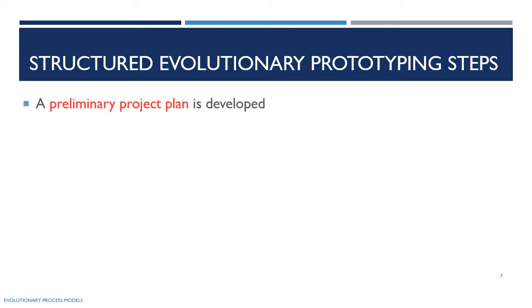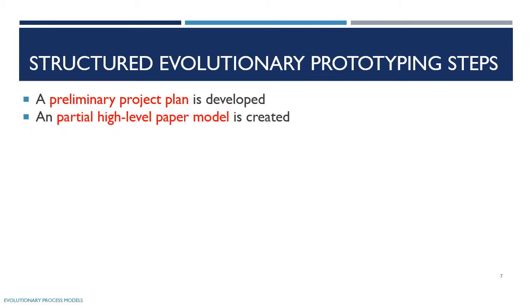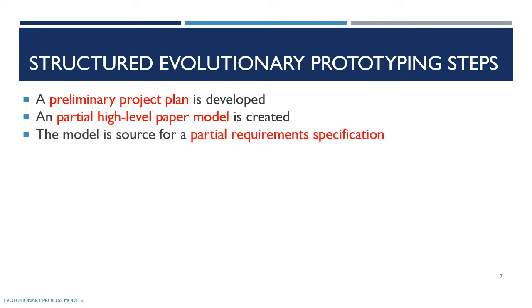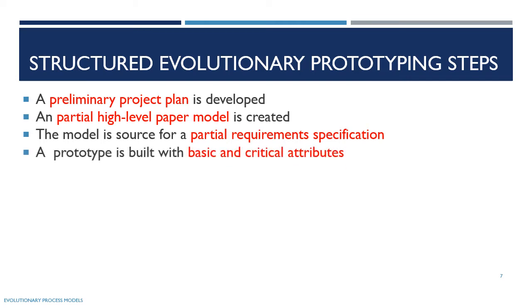Steps of the structured evolutionary prototyping model: first, a preliminary project plan is developed. Then a partial high-level paper model is created. This model serves as the source for a partial requirement specification. Next, a prototype is built with basic and critical attributes — including risk attributes — based on the requirement specification and paper model.